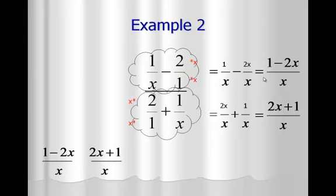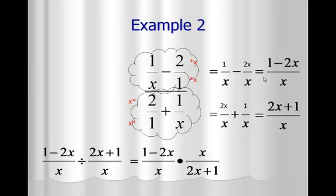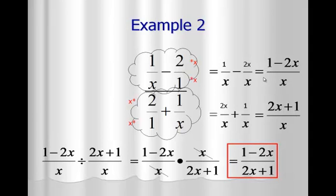Now I take the first cloud's answer and divide it by the second cloud's answer. When we divide fractions we copy, change, flip: copy the first fraction, change division to multiplication, and flip the second fraction so x is on top and 2x plus 1 is on the bottom. There's no factoring needed here. We have an x in the top right and bottom left that cancel. The final answer is 1 minus 2x over 2x plus 1. The 1's and 2x's can't cancel — they're married — so this is the final answer.